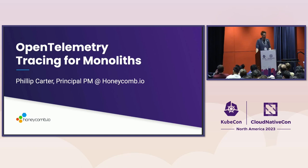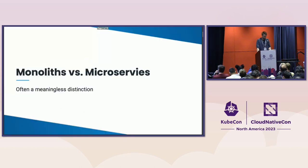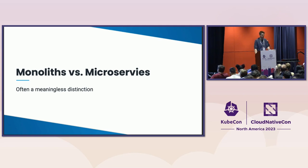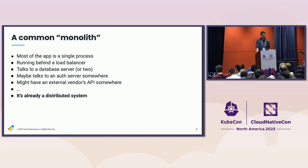Usually people talk about distributed tracing when they're referring to microservices and big distributed systems. But I don't think that's really the reality that a lot of people live in. I want to begin by saying that monoliths versus microservices is a pretty meaningless distinction. The messy reality is that we're living in some sort of in-between world.